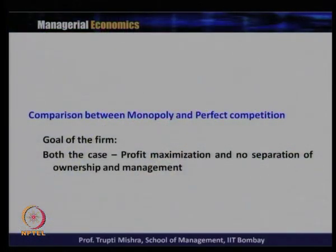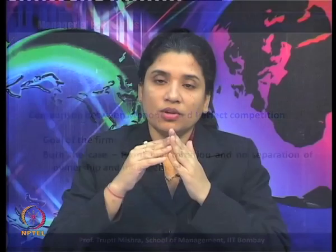Since we have discussed so many types of monopoly and previously discussed the perfect competitive market structure, we will now compare perfect competition and monopoly — how these two markets differ from each other. When it comes to the goal of the firm in both cases, the goal is profit maximization. Whether it is perfect competition or a monopoly, the goal of the firm is to maximize profit, and there is no separation of ownership and management — this is uniform as a characteristic to both market types.